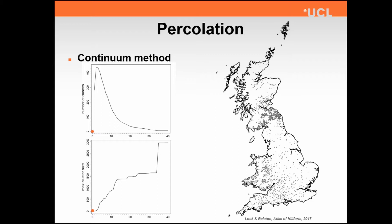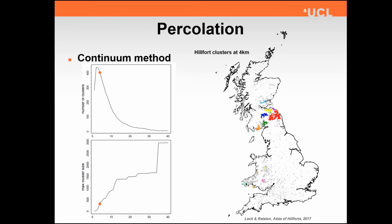Looking at some metrics here, we have two measures: the number of clusters for the percolation radius, and the maximum cluster size against radius. You'll see there are some interesting transition points. At three kilometres, we're picking out the top 15 clusters — coded red for largest, blue for second, and so forth. At zero there are no clusters because they're all individual points. Stepping through four kilometres, the cluster is beginning to grow, with some other clusters appearing down in Wales. At six kilometres, we're getting interesting things happening in Wales, and by nine kilometres some of these clusters are getting quite substantial.